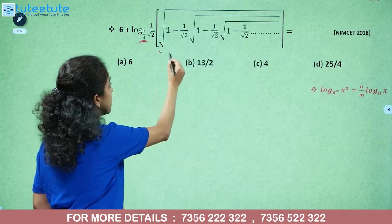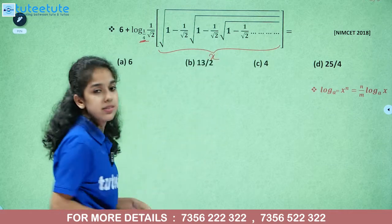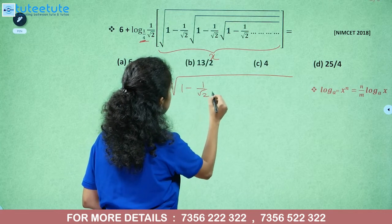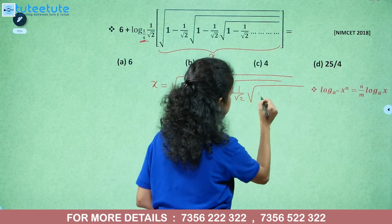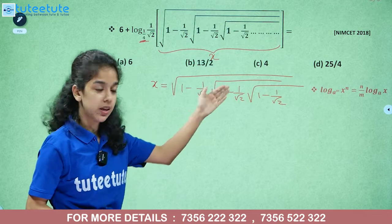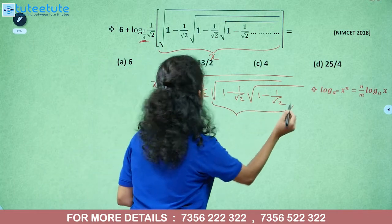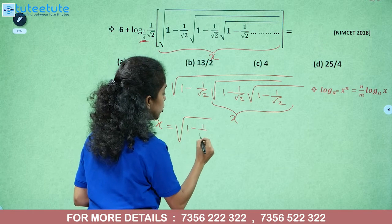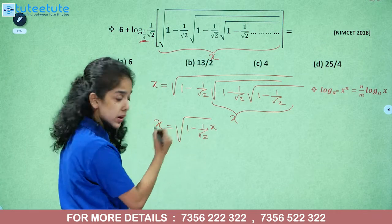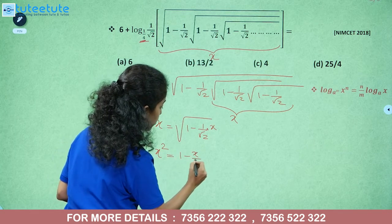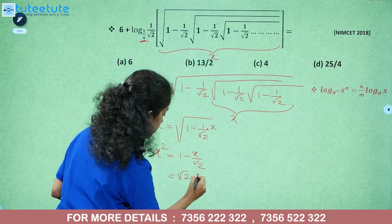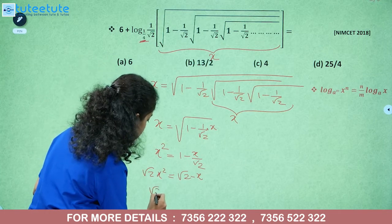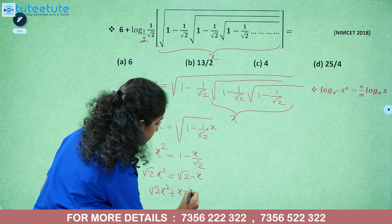We let x equal root of 1 minus 1 by root 2 times x. Simplifying inside: x equals root of 1 minus x divided by root 2. Squaring both sides: x squared equals 1 minus x over root 2, which gives root 2 times x squared equals root 2 minus x. So: root 2 x squared plus x minus root 2 equals 0.